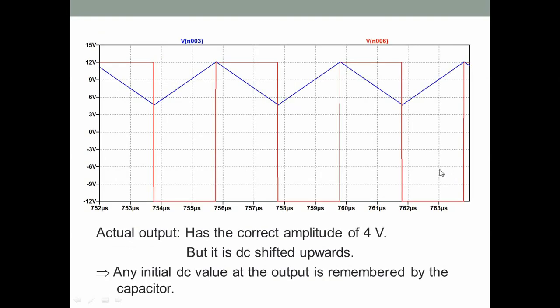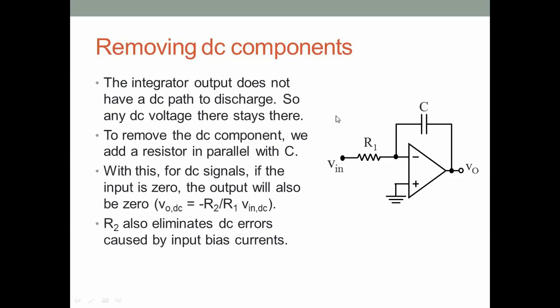The integrator output does not have a DC path to discharge, so if there is a DC voltage at the output it just stays there. Another reason this happens is input bias current: the op-amp often requires a small DC current — perhaps in micro-amps or nano-amps — and that constant DC current flowing through the capacitor will charge it to a large value over time, and it will be stuck there. So the DC shift can be caused either by an initial capacitor voltage or by op-amp bias current.